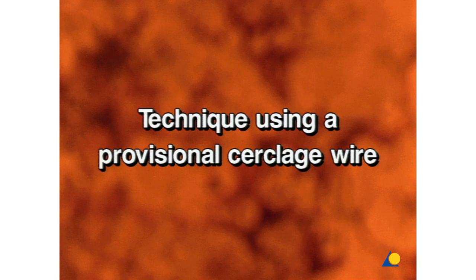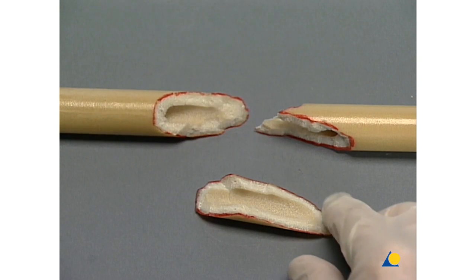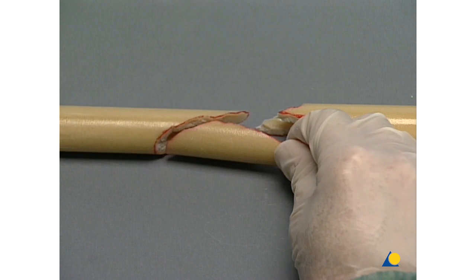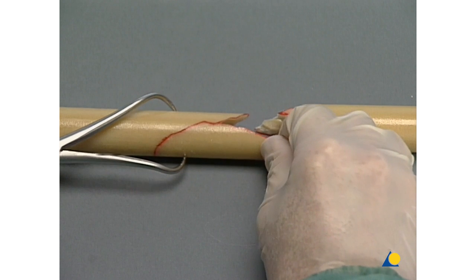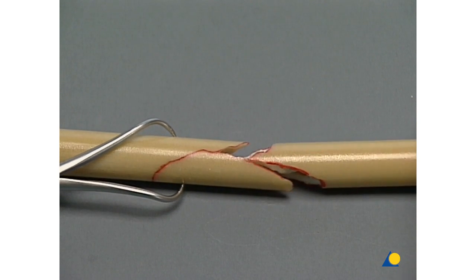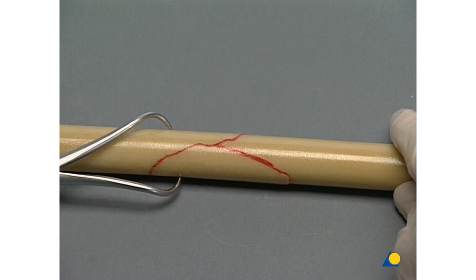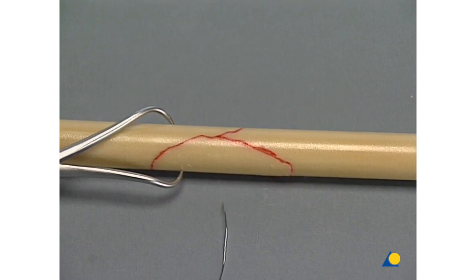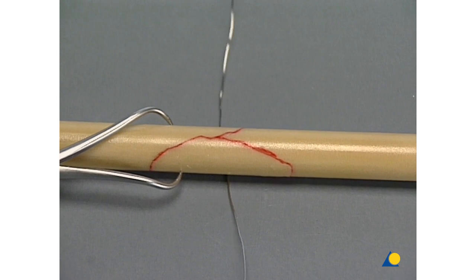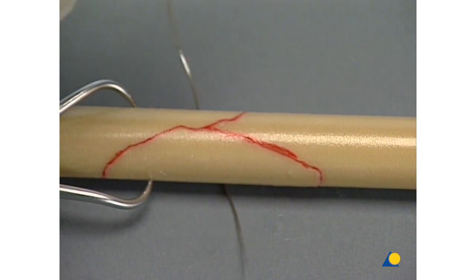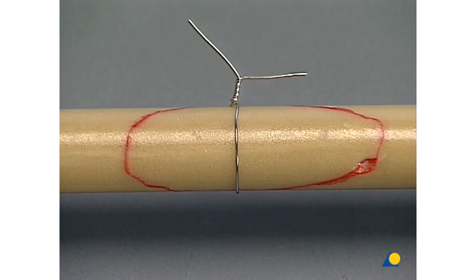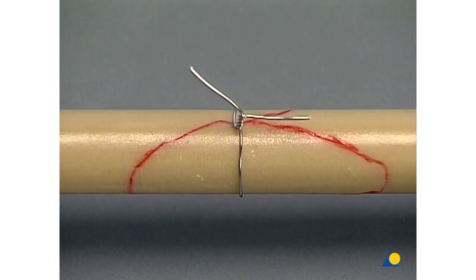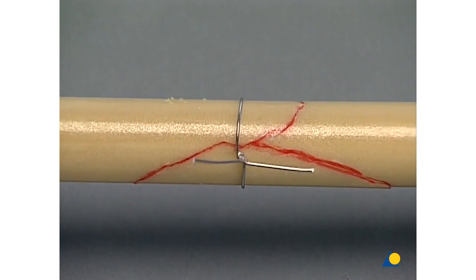Technique using a provisional circlage wire. With a very unstable fracture configuration, it is useful to obtain a provisional hold using the circlage wire technique. While the wire is being passed round and tightened, reduction is maintained by a reduction forceps or an assistant. As with all the techniques shown so far, this may result in some devitalization from soft tissue stripping.